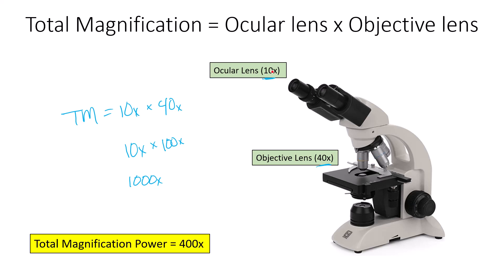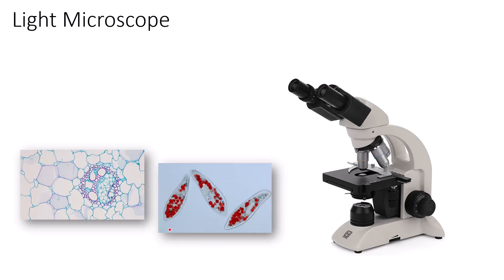Light microscopes are the microscopes we use in class. A light microscope uses a light source from below, shining light up through the specimen. It is collected by the objective lens, hits off a couple of prisms and mirrors, and travels through the ocular lens into your eye. The ocular lens provides 10x magnification and the objective lens — for example 40x — together produce total magnification.